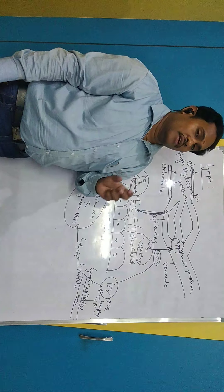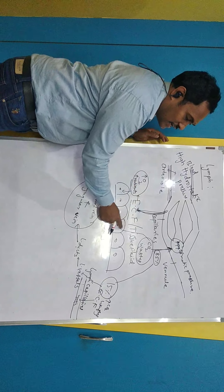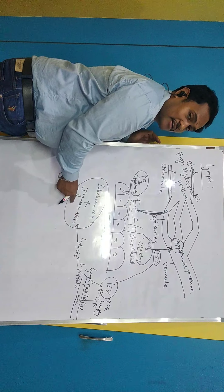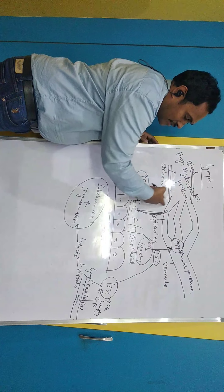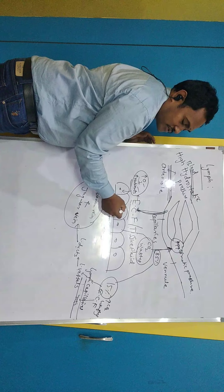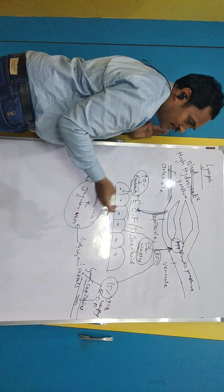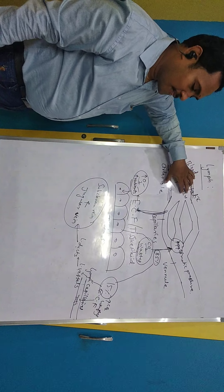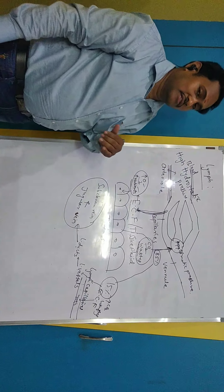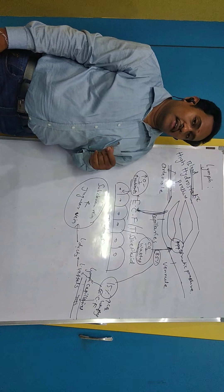You may wonder why this fluid separates from the blood vessels and then goes back. When the ECF comes out, it brings oxygen and nutrients to the tissues. When it goes back, it takes CO2 and waste from the tissues back to the blood. So between the blood and the tissues, this ECF works like an intermediary — that is the function of ECF.